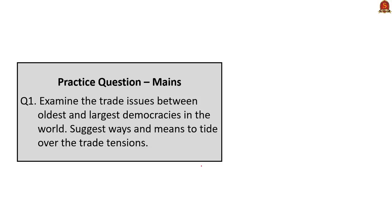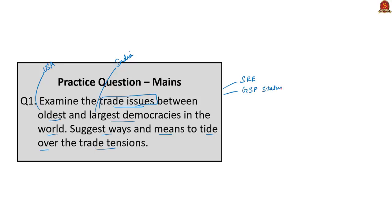Practice mains question: Examine the trade issues between the oldest and largest democracies in the world and suggest ways and means to tide over the trade tensions. USA is the oldest democracy and India is the largest democracy. The first part asks to examine ongoing trade issues — you can mention Significant Reduction Exemption, GSP status, tariff hikes by both nations, and India's e-commerce policy. The second part asks for suggestions to overcome these tensions — you can include contents from the editorial analysis and add your own suggestions as well.